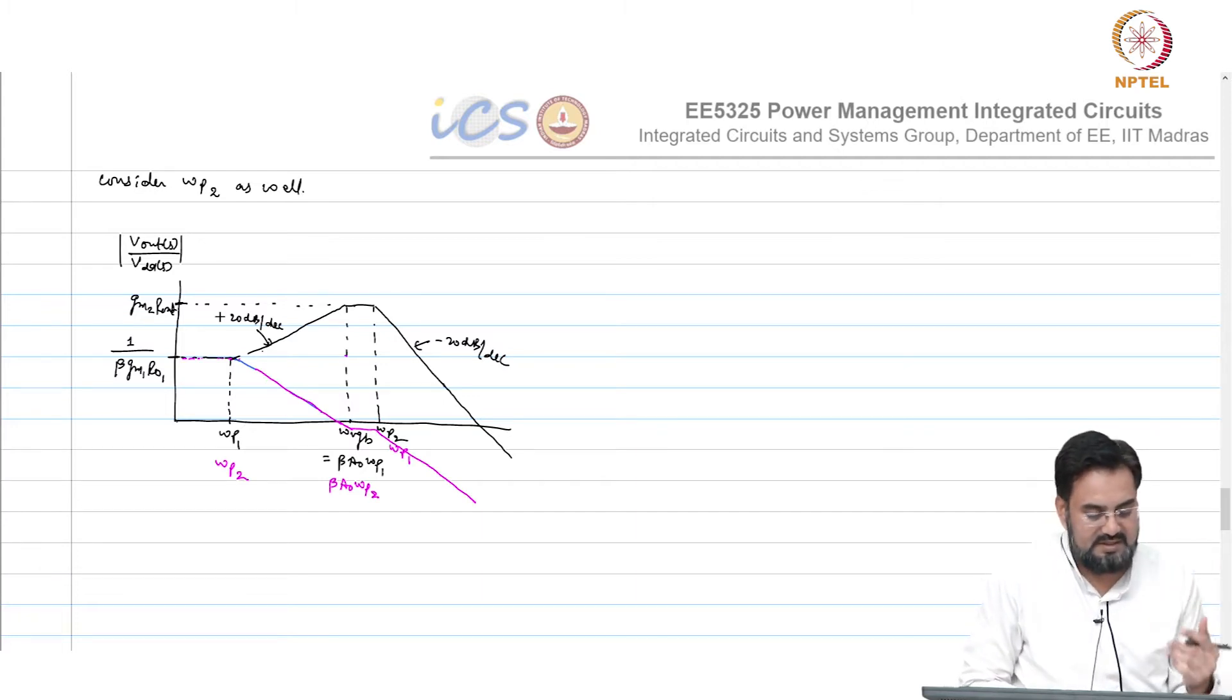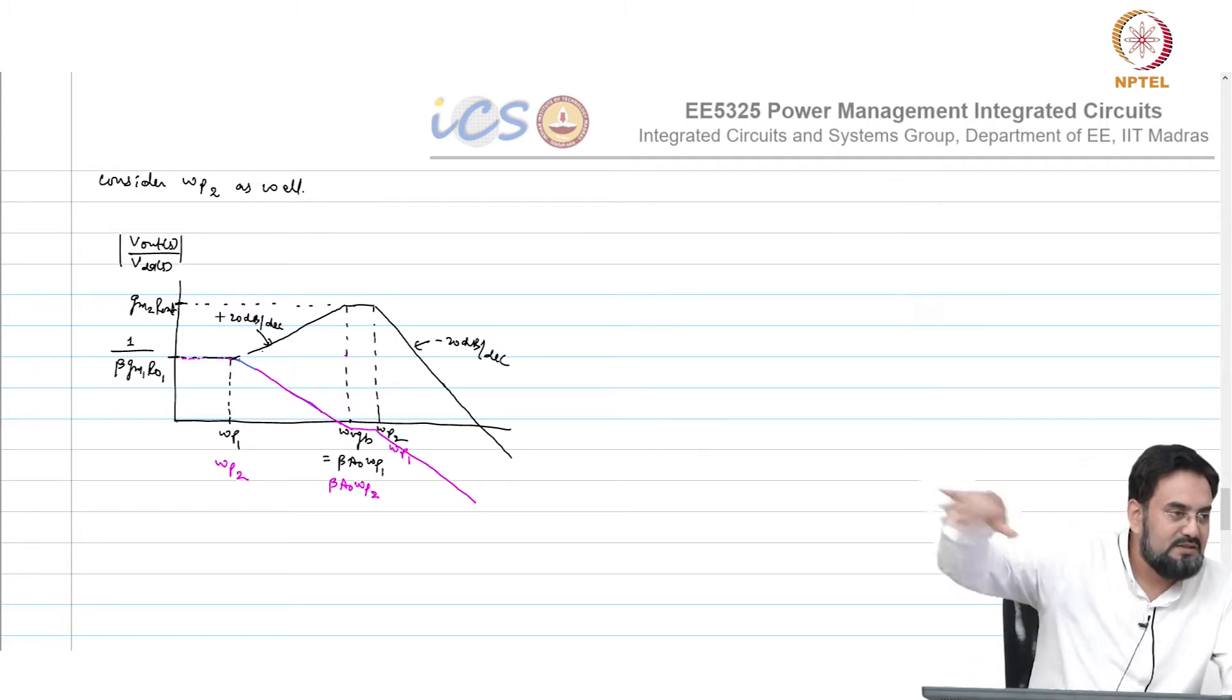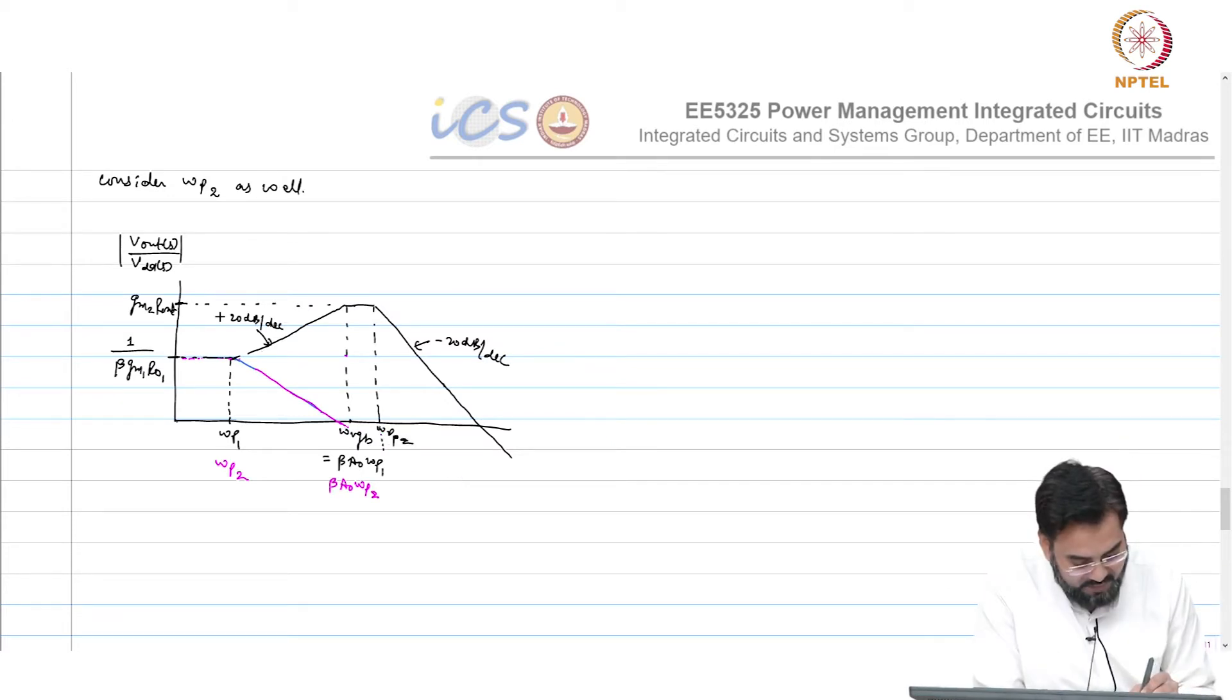Let's make some space here. This is the point where it will and then it will keep going. There is no such plus 20 dB gain here, because in the previous case zero was coming first and then the pole. But in this case, pole is coming first, then zero will come, flatten out and then again.